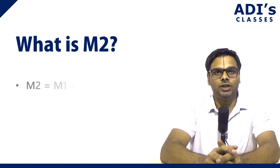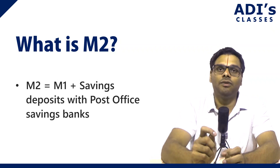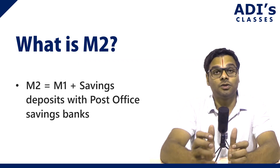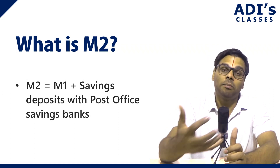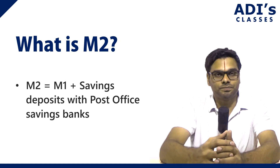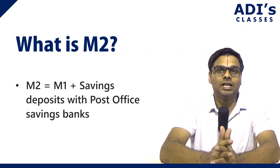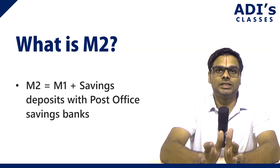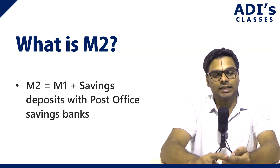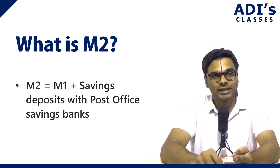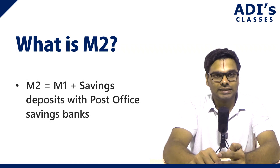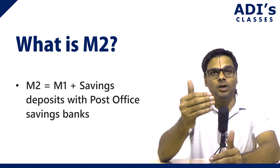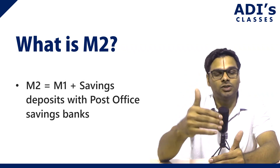Next, M2 is equal to M1 plus saving deposits with post office savings banks. Earlier, post office savings banks were very important because in rural areas there would not be many banks, so the post office would take deposits from villagers and hold them. So M2 is M1 plus saving deposits held with post office savings banks — that is, currency held by the public plus net demand deposits plus savings deposits with post office savings banks.